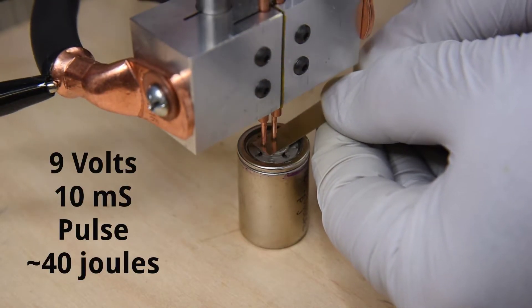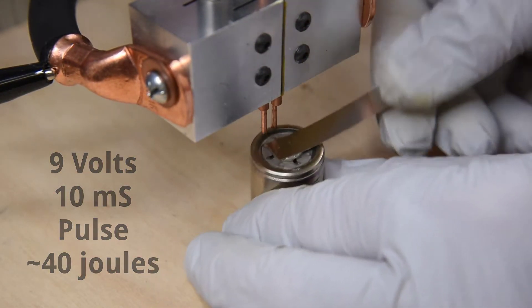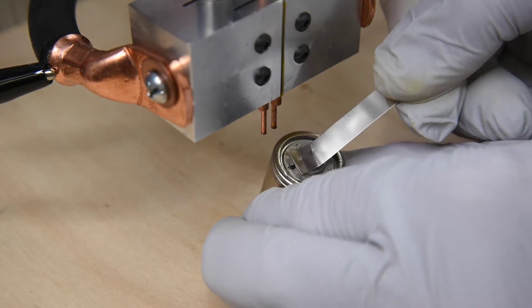When we get to 40 joules, I can no longer easily pull the tab off by hand, and it leaves just the tiniest of nuggets.